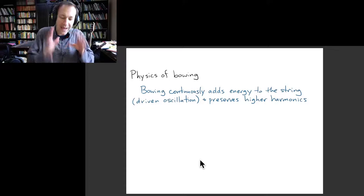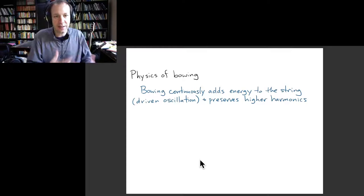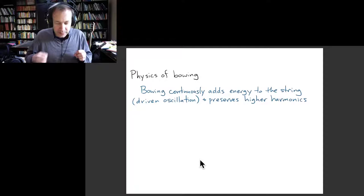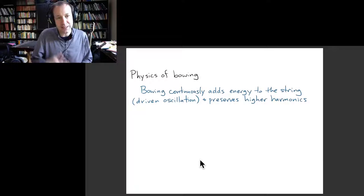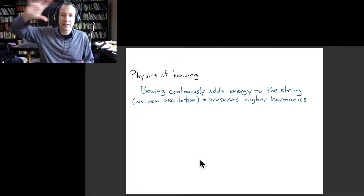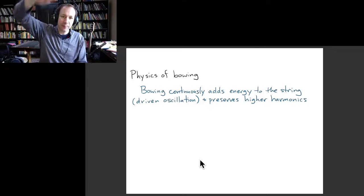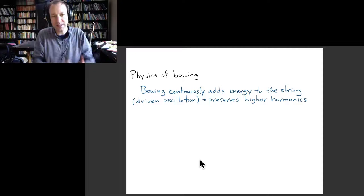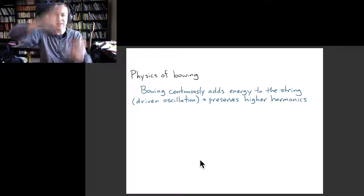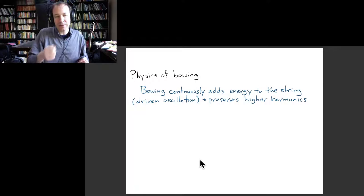So the main thing that distinguishes bowing from hammering the string like in the hammered dulcimer or the piano or plucking the string like the guitar or a harpsichord or a harp is that you're continuously adding energy. So instead of just displacing the string or giving it some velocity at the start, the bow is actually doing something like the demo where I took an oscillator, a mass on a spring, and just applied a periodic force to the top that had a frequency similar to the natural frequency of my oscillator. And then that gave rise to a continuous oscillation with a significant amplitude.